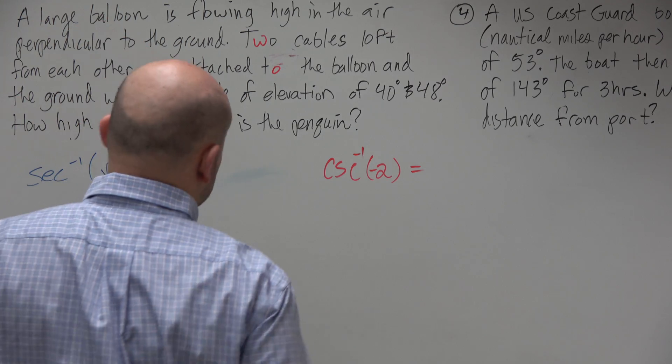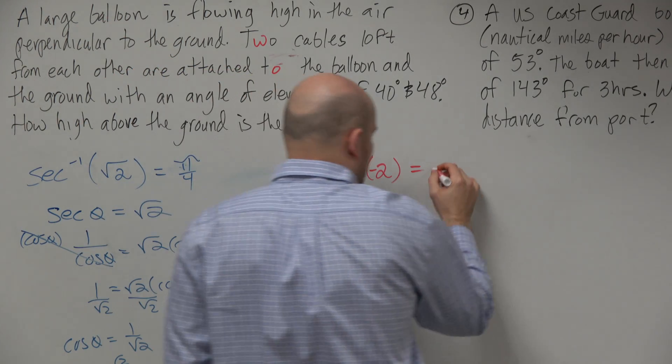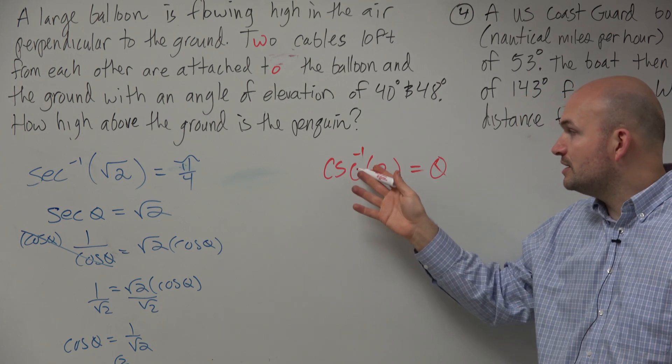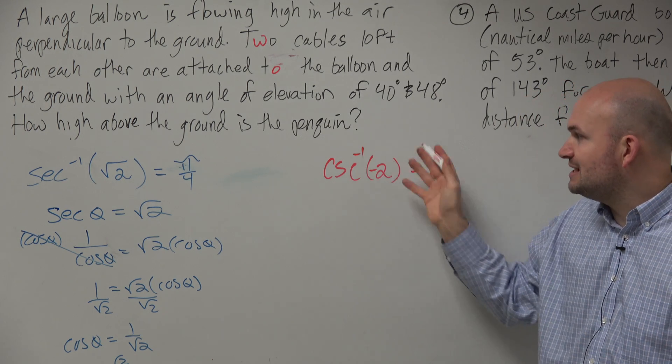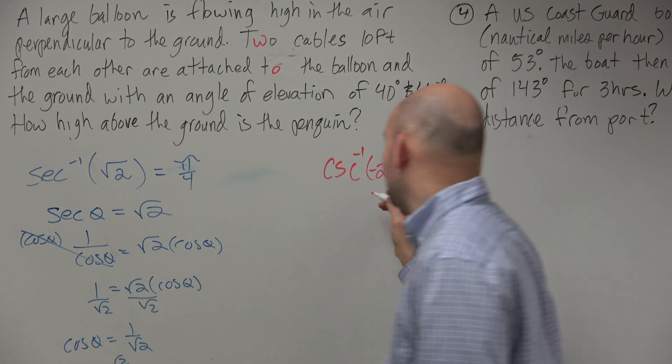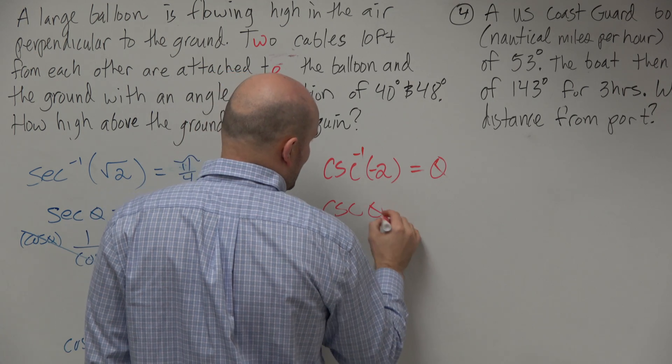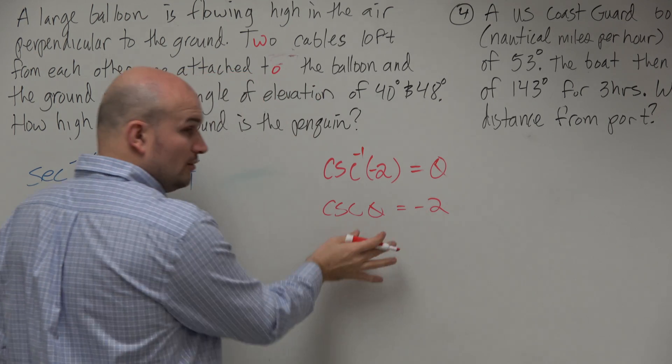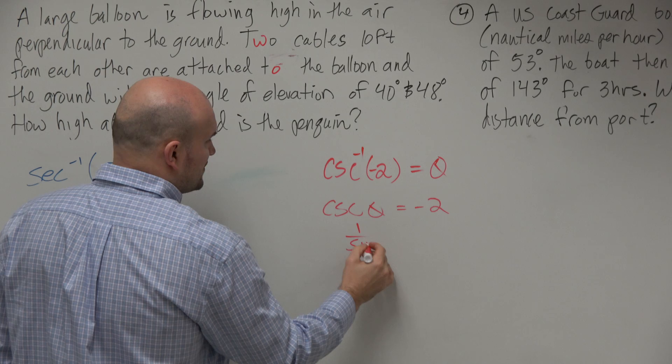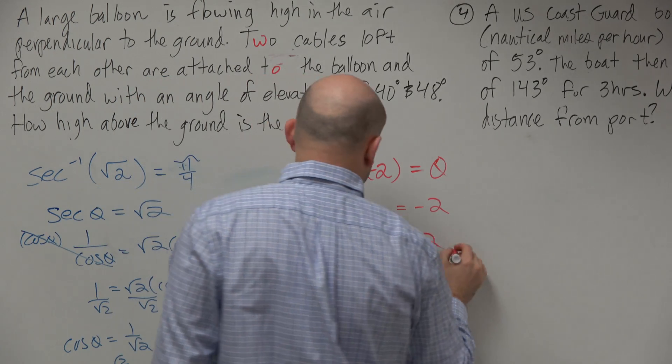So when looking at this one again, we're trying to look at the angle. We're trying to find what angle gives me the cosecant of what angle gives me negative 2. I look at this as cosecant of theta equals negative 2, which I can rewrite as 1 over sine of theta equals negative 2.